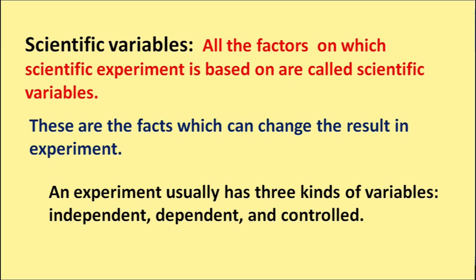An experiment usually has three kinds of variables: independent, dependent, and controlled.